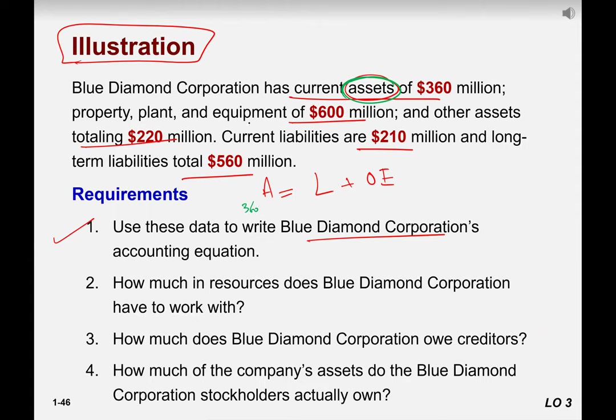That are in possession of the company? Yes, property, plant, equipment 600, right, plus 600. Any other? Yes, 220. So the total value is 600 plus 220 is 820, 820 plus 360, how much? 1180, right? So 1180.